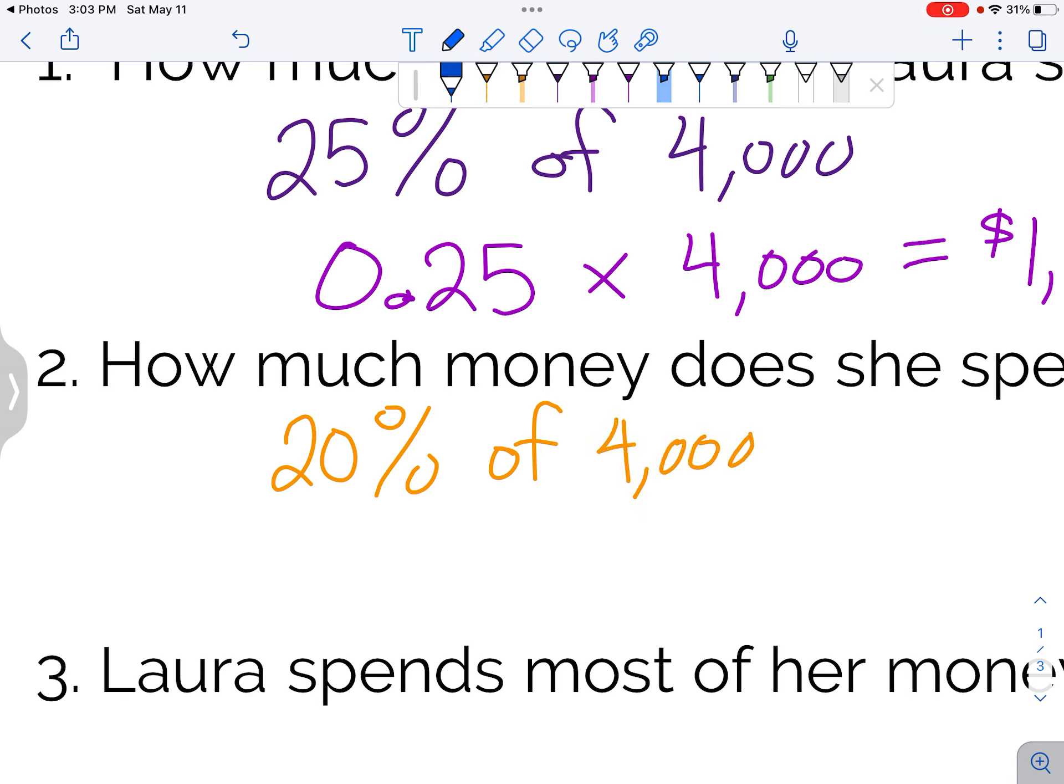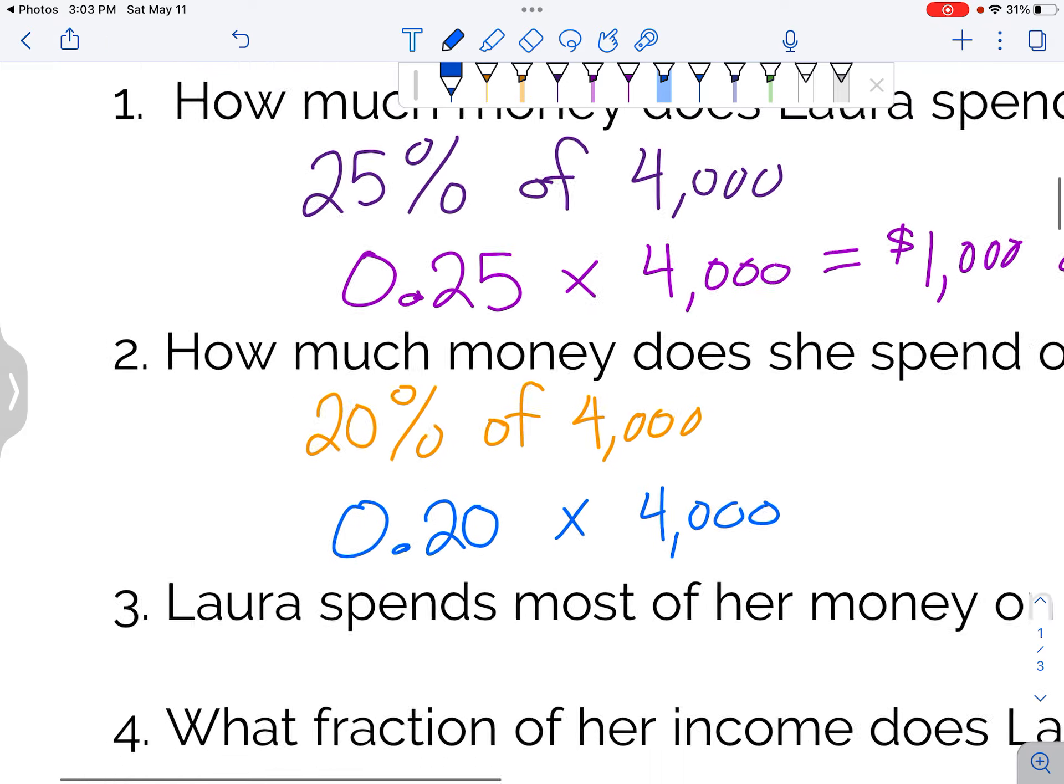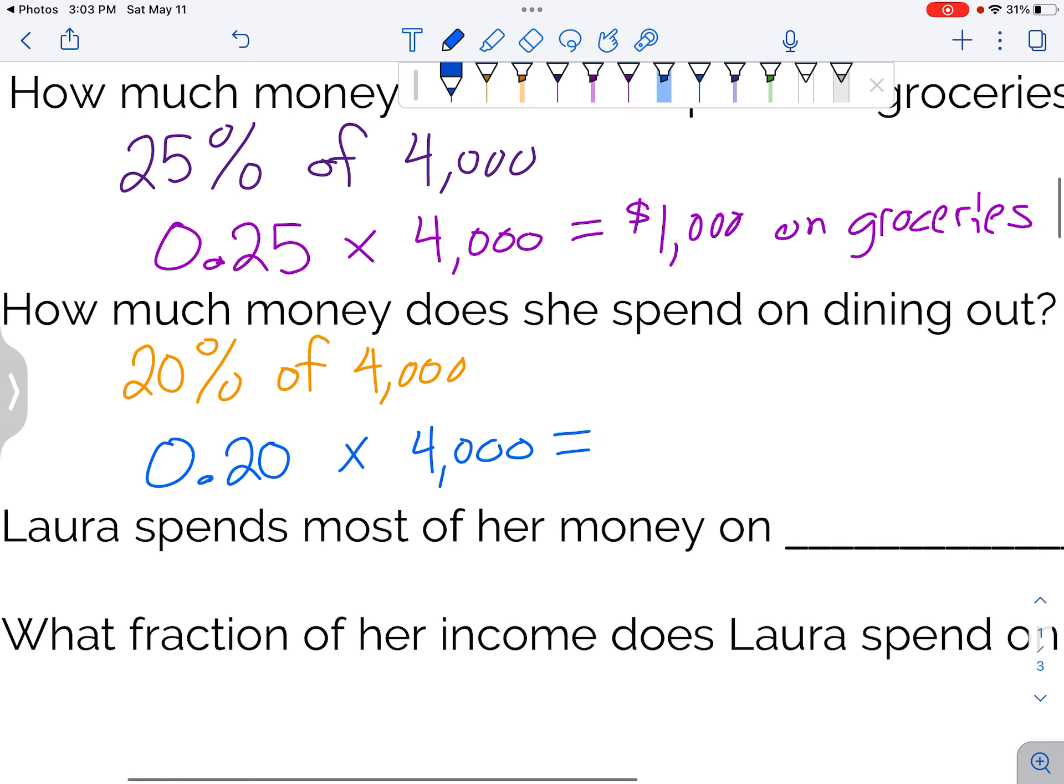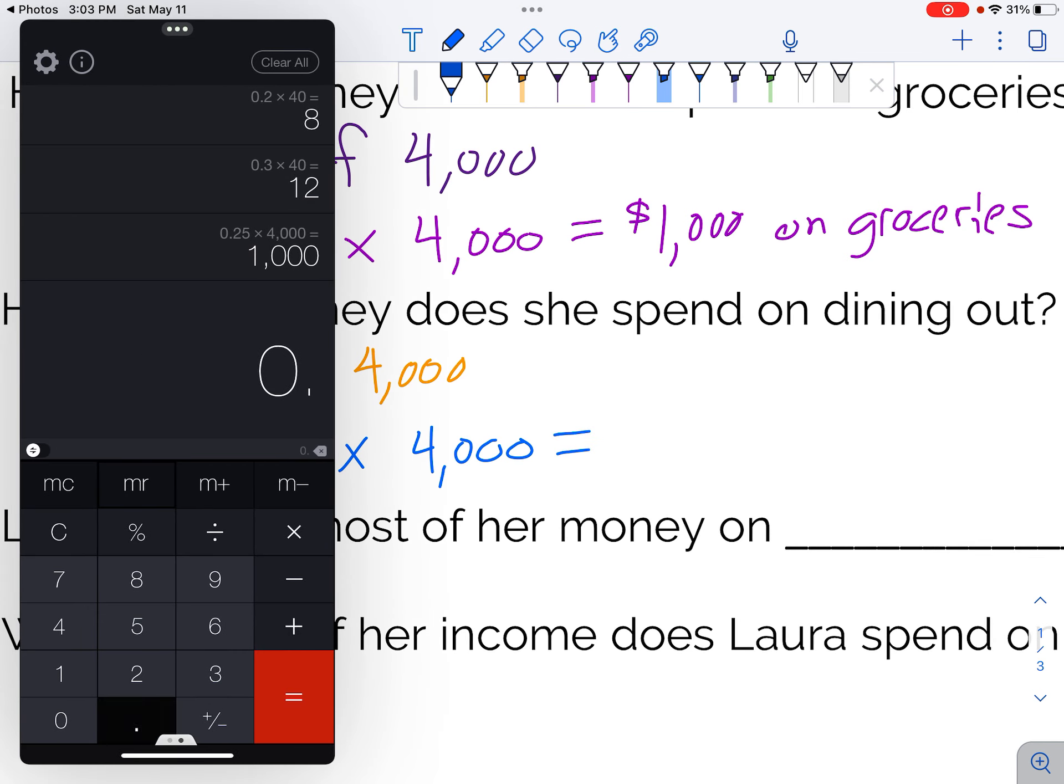That's the same as 0.2, but you can put in the zero if you want to, times $4,000. Here we go. 0.2 times $4,000. $800.